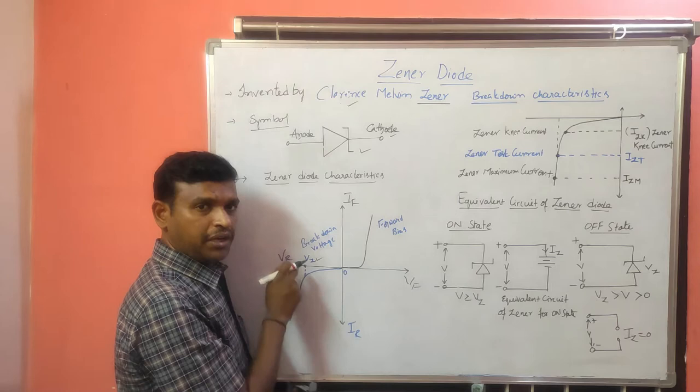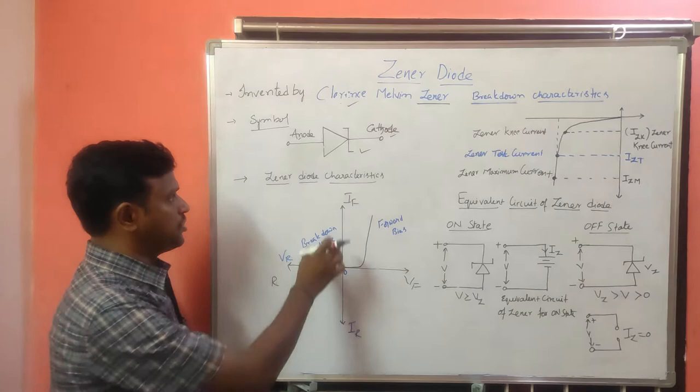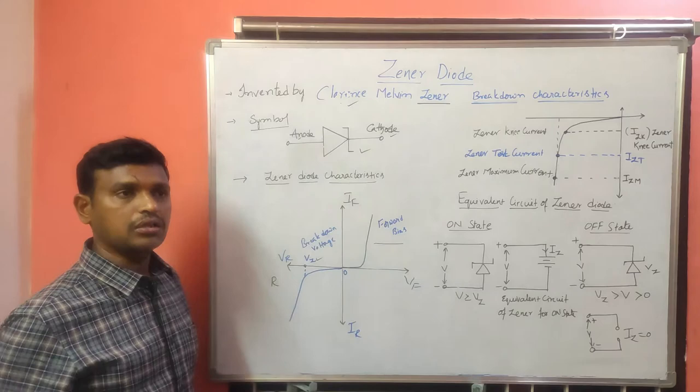The GINA breakdown is obtained in the GINA diode because of its high doping concentration at a very small reverse voltage. This is about the characteristics of the GINA diode. The forward bias characteristics look the same as normal forward bias characteristics, and in reverse bias we get the breakdown voltage where the current shortly rises.